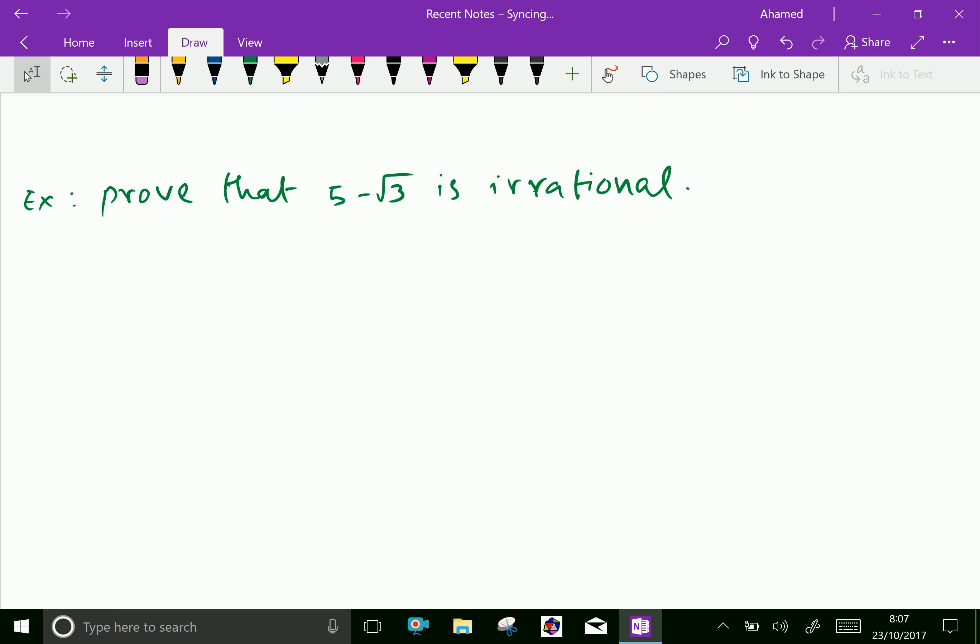One more example: prove that 5 minus root 3 is irrational. Solution: let 5 - √3 be rational, so we can express 5 - √3 = a/b, which gives 5 - a/b = √3.